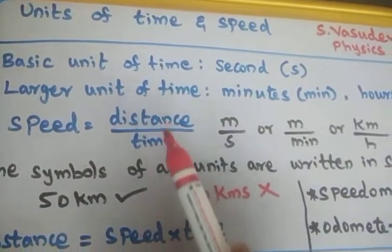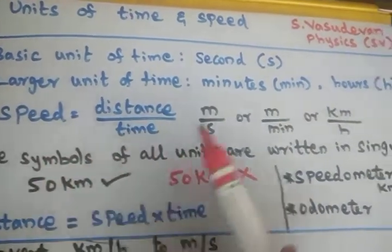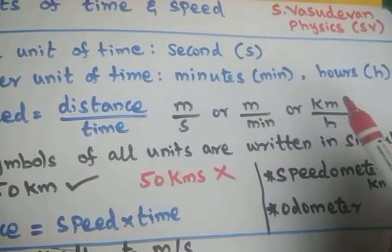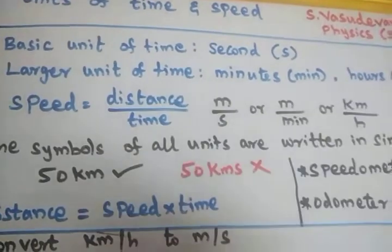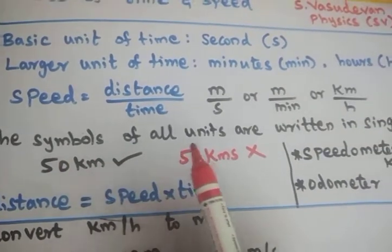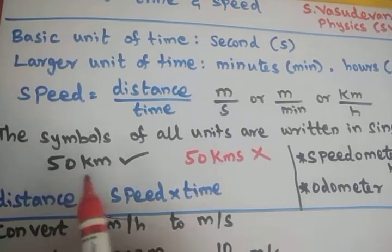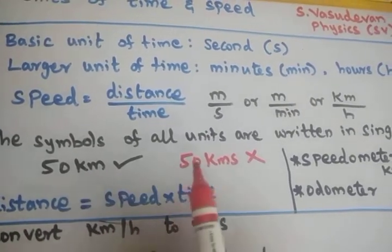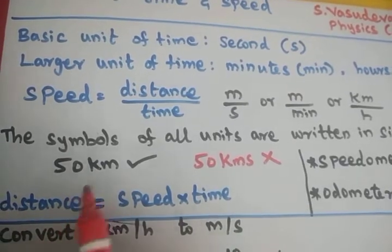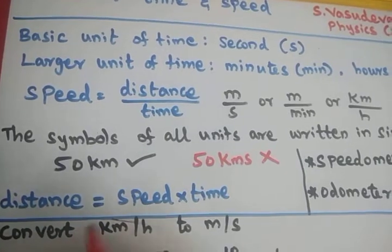By knowing the unit for distance and the unit for time, we can express speed in terms of meter per second, meter per minute, or kilometer per hour for our convenience. The symbols are always expressed in singular — for example, write '50 km', not '50 kilometers'. Writing '50 kilometers' is wrong. The kilometer symbol should be 'km'.